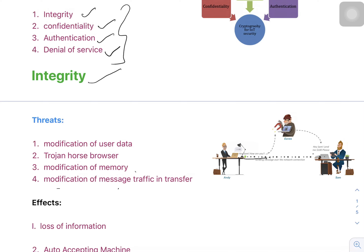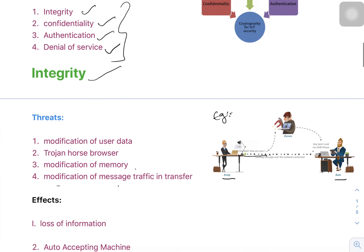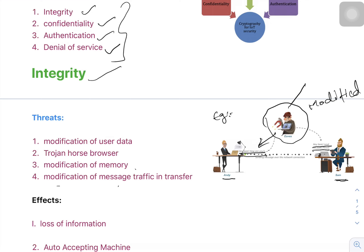The first parameter is integrity. Integrity means the modification of user data. Here is an example: there are two persons, Andy and Sam. They both want to communicate with each other using mail. Andy is sending a message 'Hey Sam, how are you,' but Sam receives a message 'Hey Sam, lend me 100 dollars please.' The hacker attacked and modified the message — this is called an active attack, where the hacker can not only see but also modify the message.